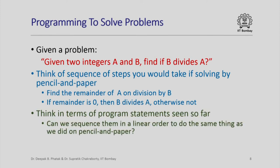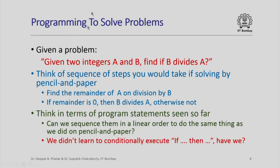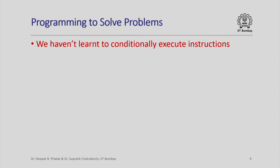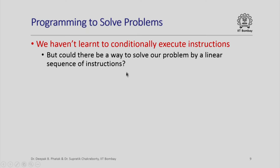Having come up with this recipe, we can think in terms of program statements we have seen so far and ask: can we sequence them in a linear order to get the same effect? One thing to note is that the pencil-and-paper solution uses 'if remainder is 0 then do something, otherwise do something' — that is conditional execution, which we have not learnt yet. But this is also an opportunity to think: is there a way to solve the problem without conditional execution, using just a linear sequence of instructions? It turns out we can.